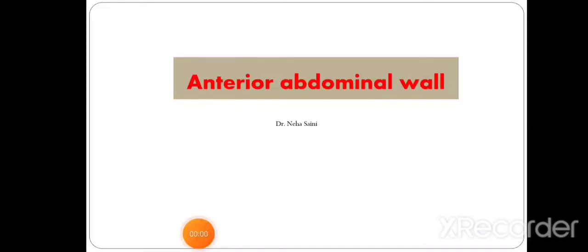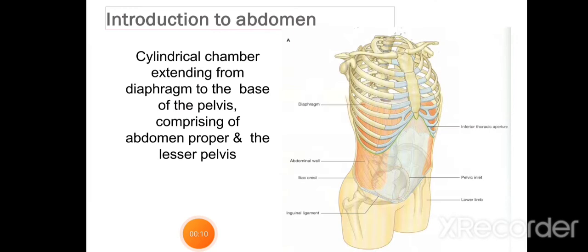Hello everyone, myself Dr. Neha. I am going to discuss the anatomy of the anterior abdominal wall. The abdomen is a cylindrical chamber extending from the diaphragm to the base of the pelvis. It comprises the abdomen proper and the lesser pelvis.